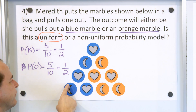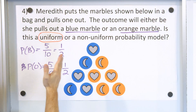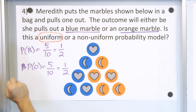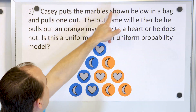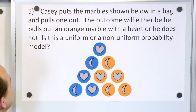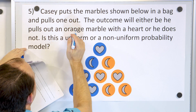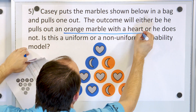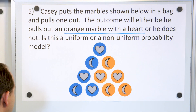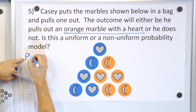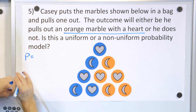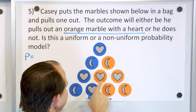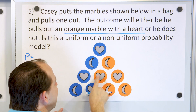In this case, we weren't concerned with the shapes — you have to read the problem. That's going to change in the next problem where Casey puts these marbles in a bag and pulls one out. The outcome will either be that he pulls out an orange marble with a heart or he does not. So that's kind of specific: orange marble with a heart or he does not.